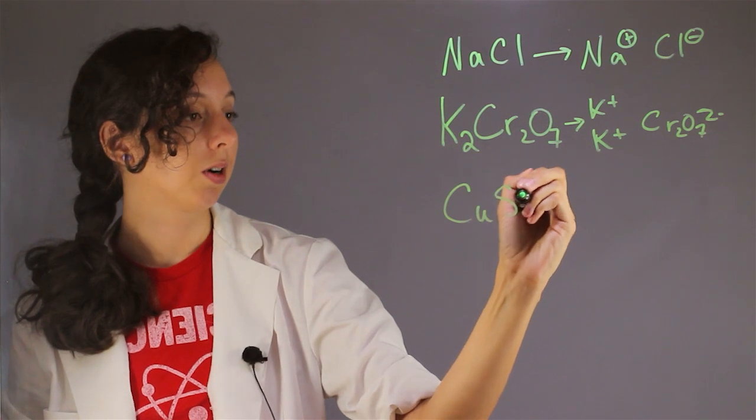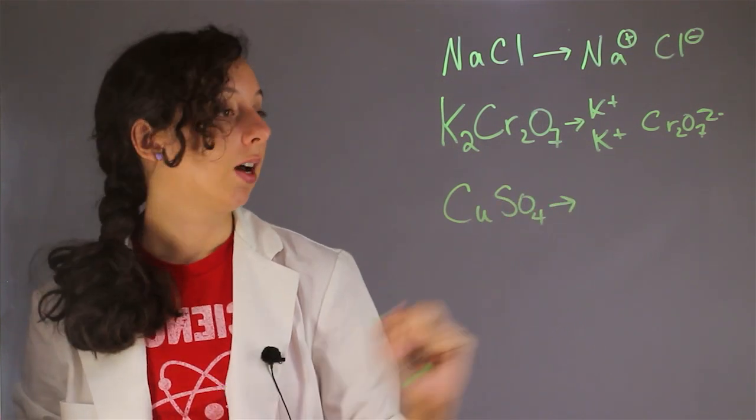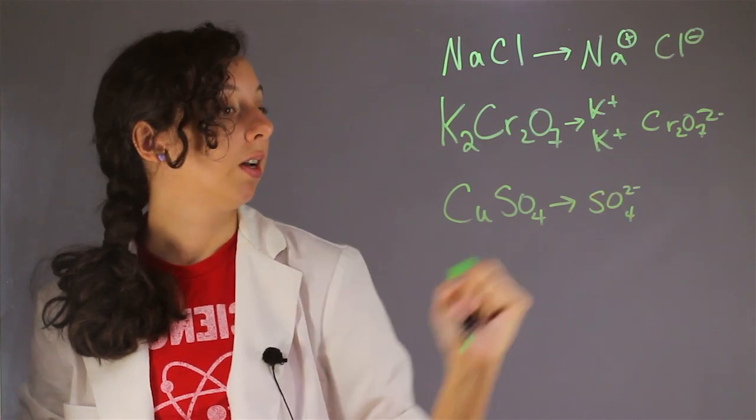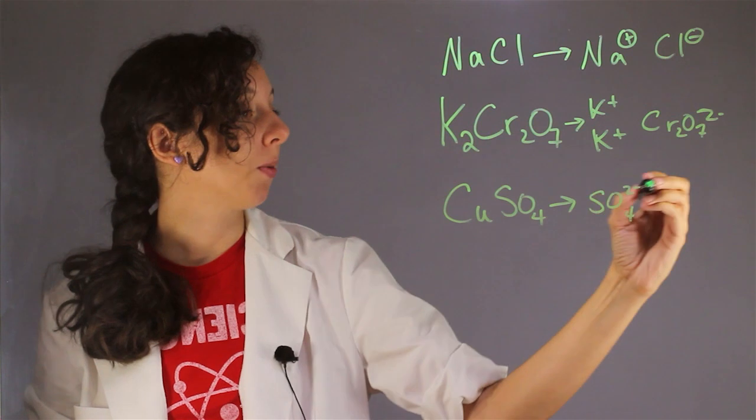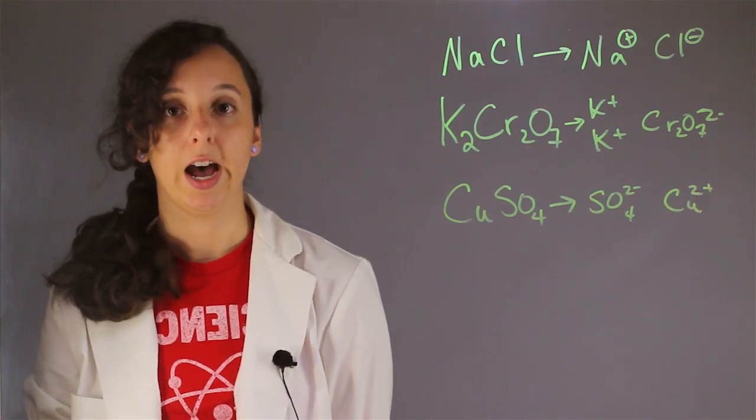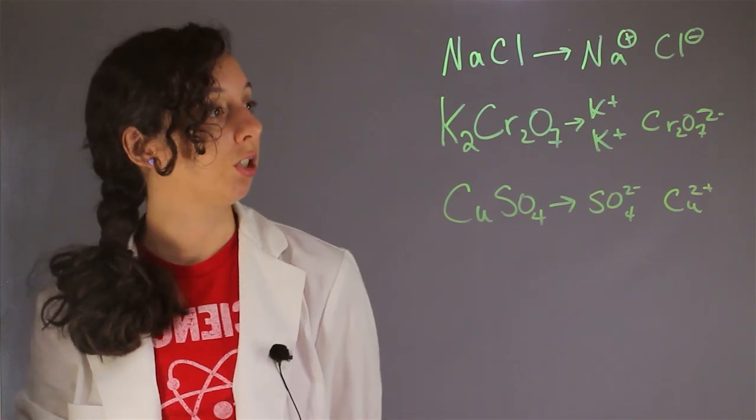We have copper sulfate and when this breaks up we know that our sulfate ion has a charge of negative 2. And this means that this must be copper 2. Remember since copper is a metal it can have a variety of different oxidation states. This one happens to be positive 2 charge.